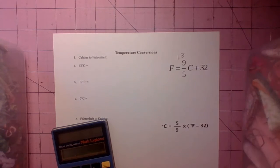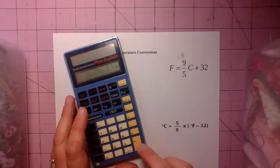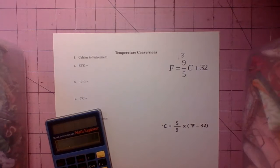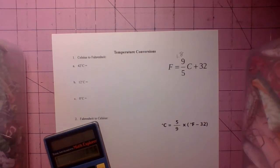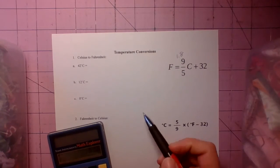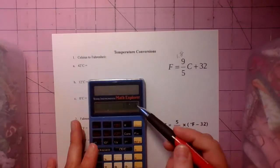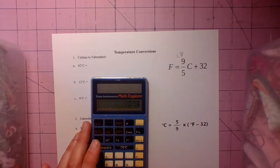So it's 1.8 times 42. Make sure to press the equal sign and then you plus 32. That last little step. Alright and it says 107.6.